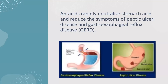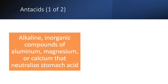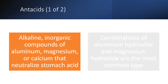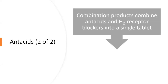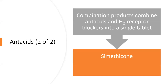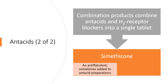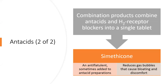Antacids rapidly neutralize stomach acid and reduce the symptoms of peptic ulcer disease and GERD. They are alkaline, inorganic compounds of aluminum, magnesium, or calcium. Combinations of aluminum hydroxide and magnesium hydroxide are the most common type. Combination products combine antacids and H2 receptor blockers into one single tablet. Simethicone is available OTC, and an anti-flatulent agent is sometimes added to antacid preparations to help reduce gas bubbles that cause bloating and discomfort.